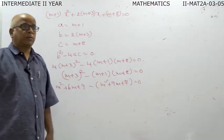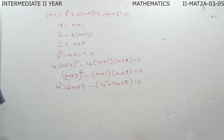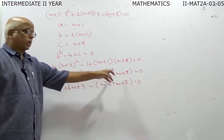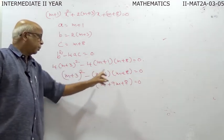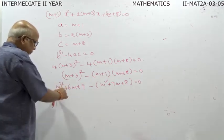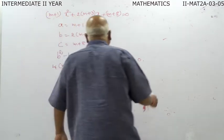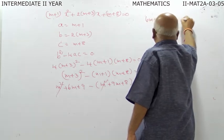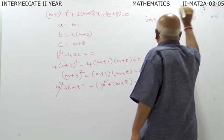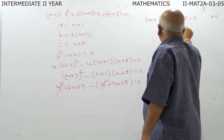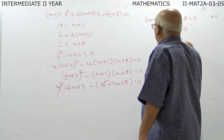By applying the a plus b whole square formula — a-squared plus 2ab plus b-squared — we get m-squared plus 6m plus 9. For the product of m plus 1 and m plus 8: m times m is m-squared, 8m plus m is 9m, and 1 times 8 is 8. The m-squared terms cancel, giving 6m minus 9m plus 9 minus 8 equal to zero, so minus 3m plus 1 equal to zero, giving m equal to 1 by 3.